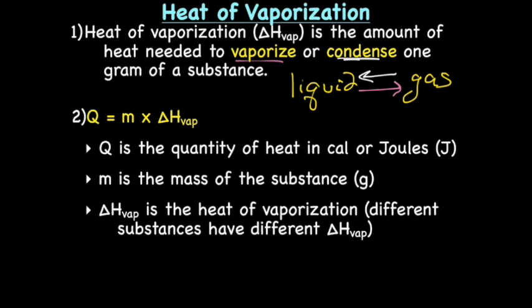And ΔH_vap is the heat of vaporization, which is a constant for a particular substance. Every substance has its own ΔH or heat of vaporization, just like every substance has its own specific heat of fusion.